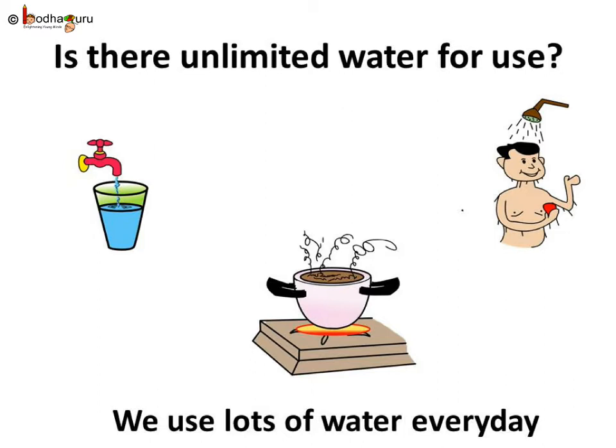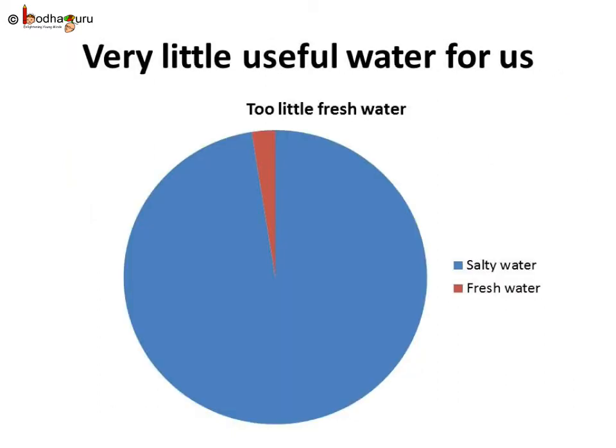Is there an unlimited amount of water on the earth? No, we all know that water on earth is very limited. We already know only 2.5% of water on earth is fresh and useful, which is very less. The rest of it is salty water which is unfit for drinking, agriculture, etc.